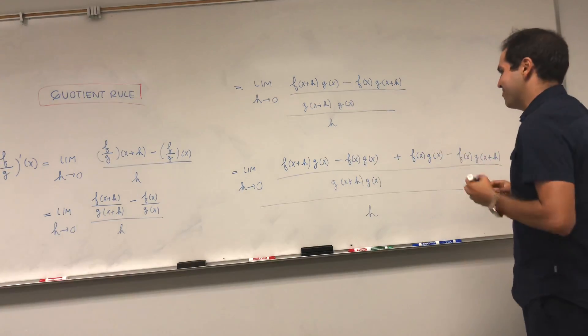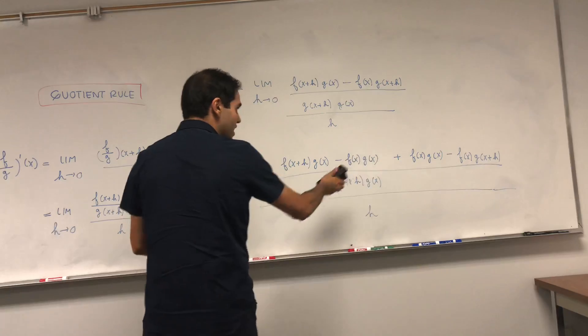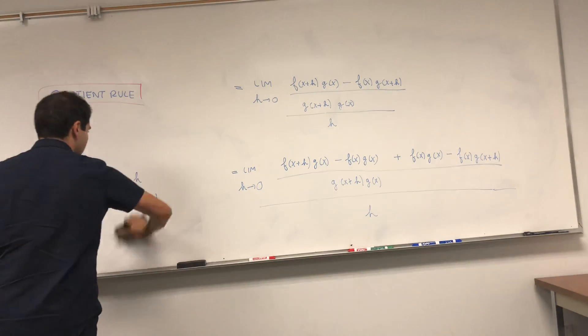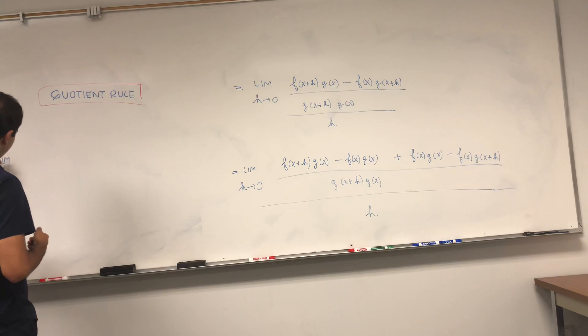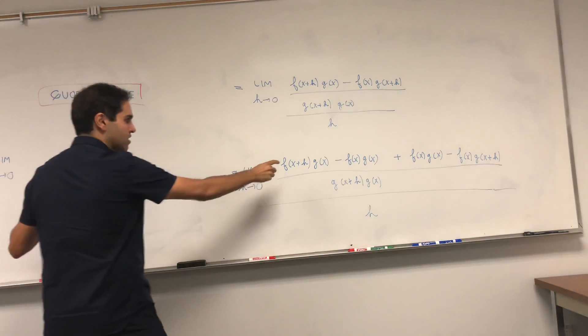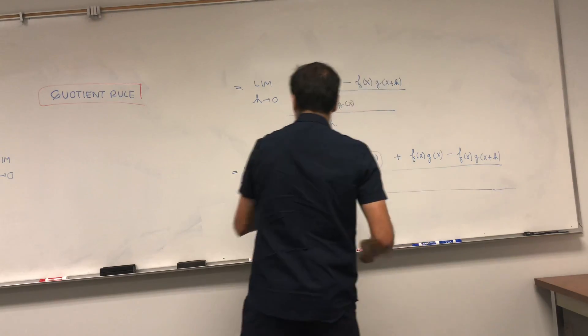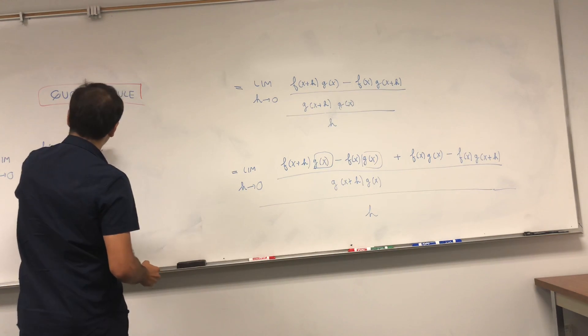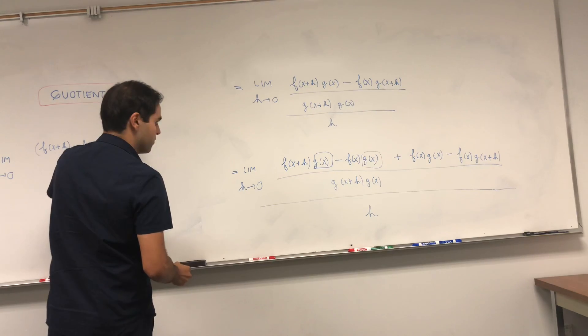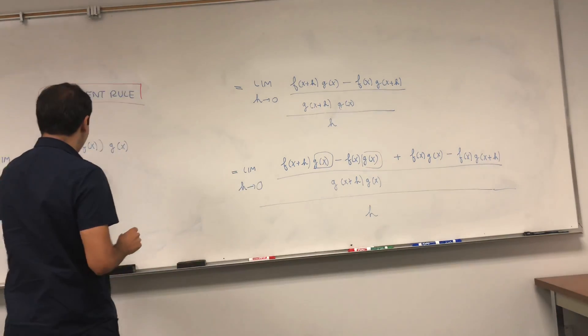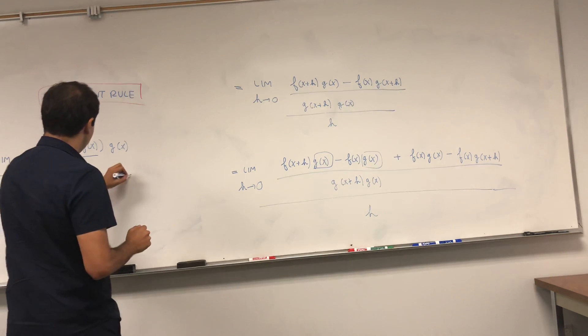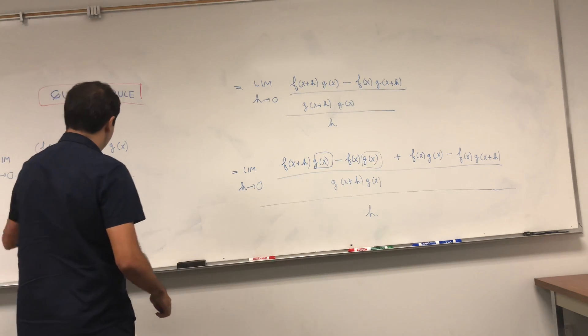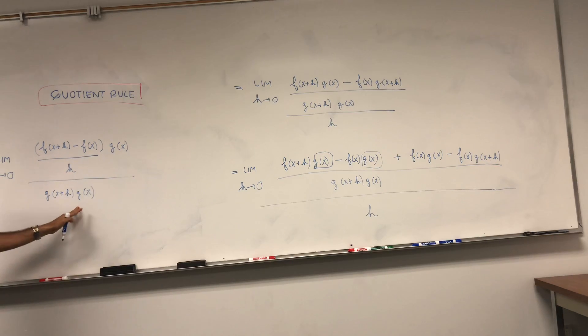And I could have just put the h here, but whatever. Okay, and now notice those give really two distinct terms, one where the g of x falls out. So limit h goes to zero. Now let's factor out this g of x term. We get f of x plus h minus f of x times g of x. And then we can divide this by h, and that's actually very useful in a second. And we add all this divided by g of x plus h times g of x.